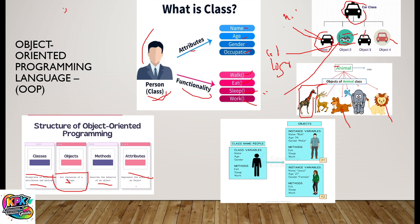Let's look at another example. There is a class called people. The class has attributes: names, age, and gender. Then it has methods or functionalities — so every person eats, sleeps, and rests. We can have instances of the class. The class is people. An instance could be a person called Bob. Bob is an instance of the class people, and Bob has attributes like name, age, and gender. Bob is human and so has methods like eating, sleeping, and working.